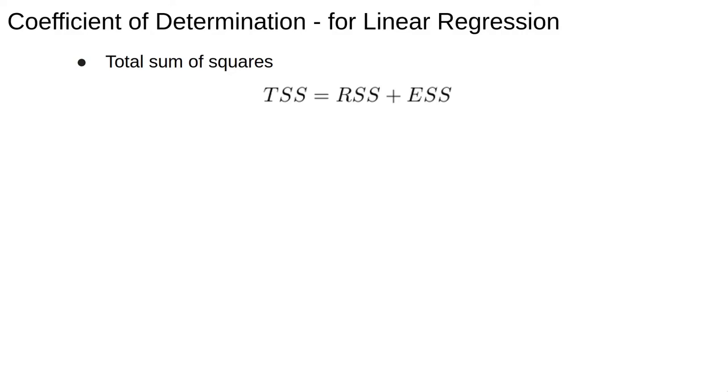Using this relation, we can see the total variation is split into two parts. The explained sum of squares, which is the variance explained by the model, plus the residual sum of squares, the variance not explained by the model. We can also write R squared in the form of ESS over TSS. High R squared corresponds to high ESS, that is, most of the variance is explained by the model.